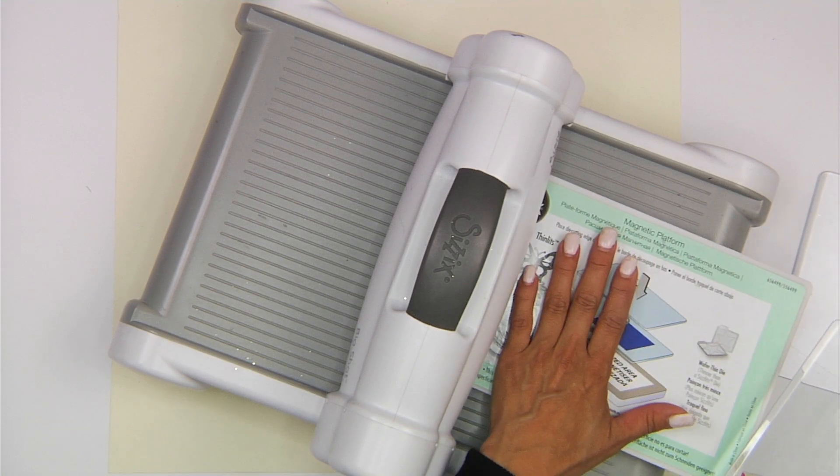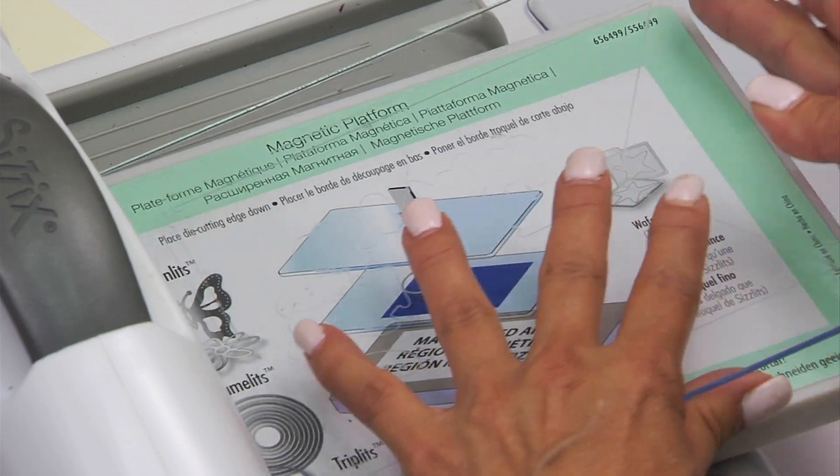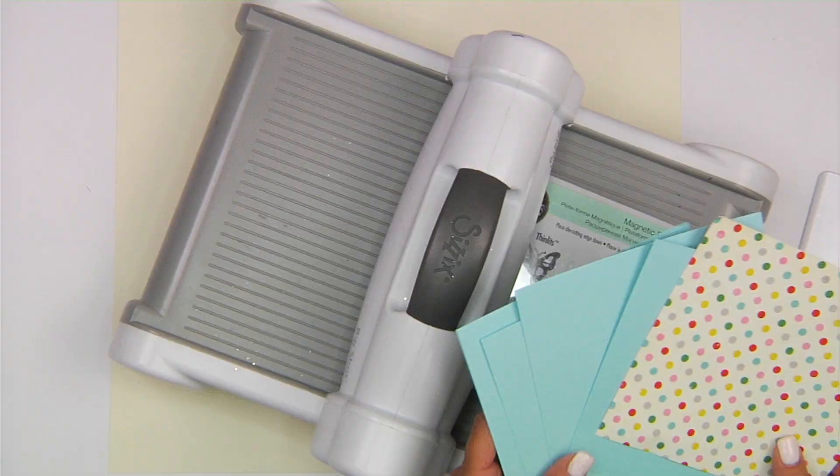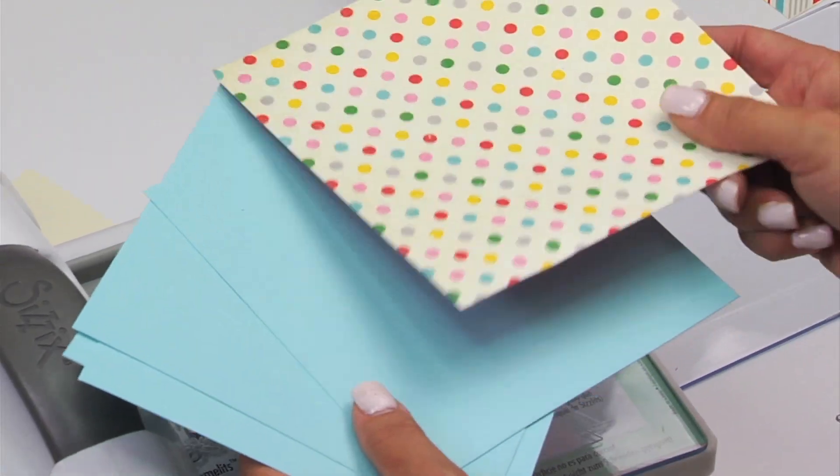To begin creating this card, I already have my magnetic platform and my cutting pad right on top. Now, you will need five sheets that are six by six, four that are solid, and one that is a pattern.